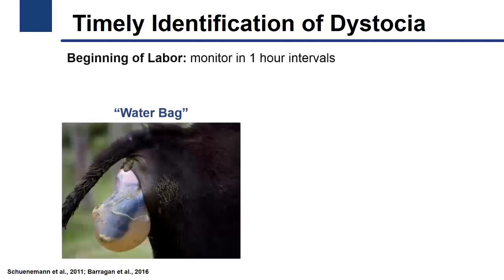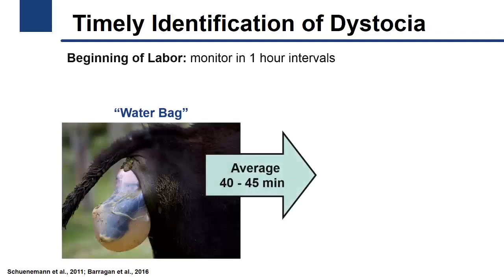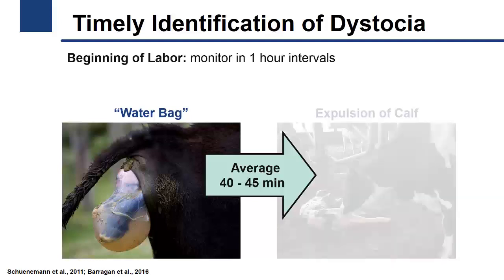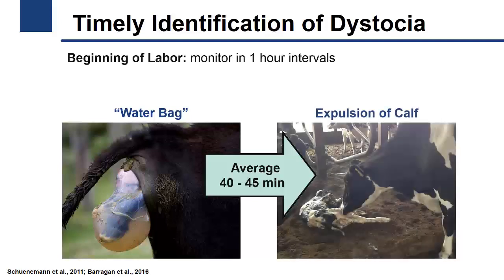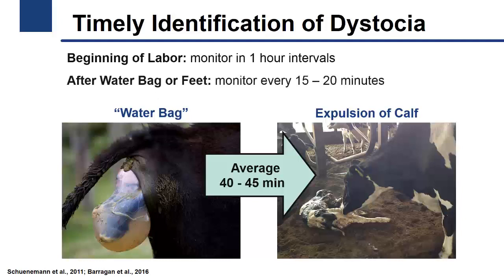Once this process starts, it lasts on average 40 to 45 minutes and gradually progresses every 15 to 20 minutes, ending with the total expulsion of the calf. Therefore, once the feet of the calf are observed through the vulva, the cow should be monitored at least every 15 to 20 minutes to make sure progress continues.